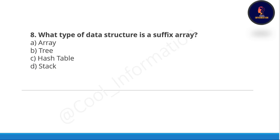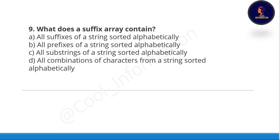Next question: what type of data structure is a suffix array? From the name, it is an array. Next question: what does the suffix array contain? Option A is all suffixes of a string sorted alphabetically, option B is all prefixes sorted alphabetically, option C is all substrings sorted alphabetically, option D is all combinations of characters sorted alphabetically. Correct option is A.